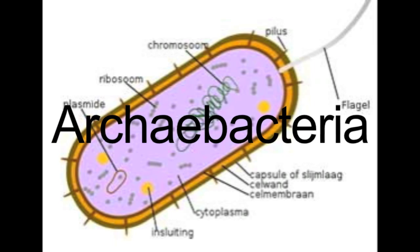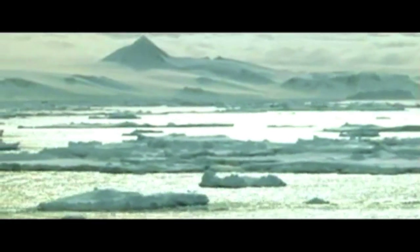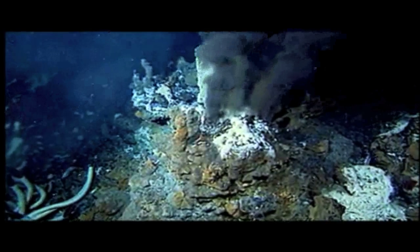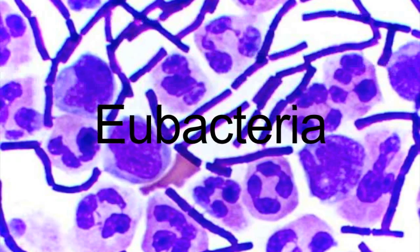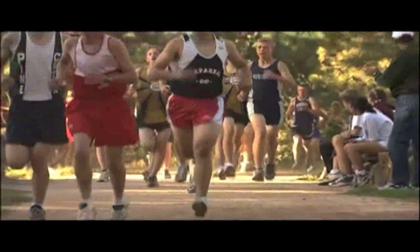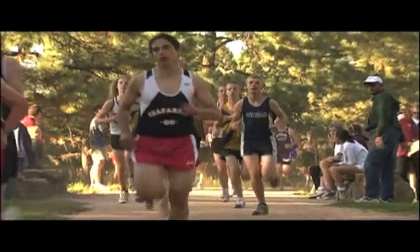Bacteria can be used to make insulin for diabetes patients. Archaea live only in extreme environments and are the most ancient form of life. Eubacteria are most bacteria and can even be found on and in the human body.